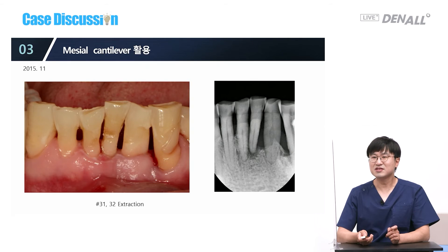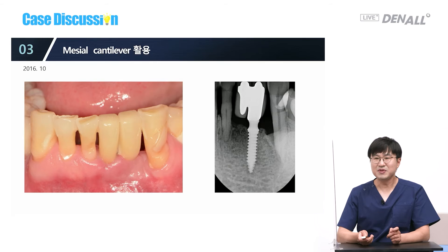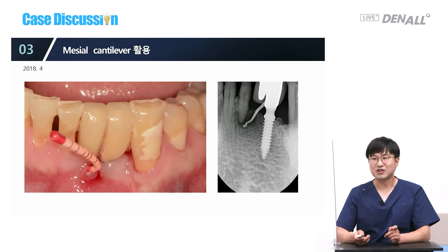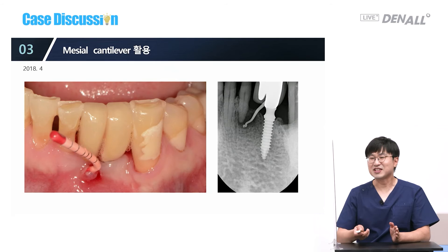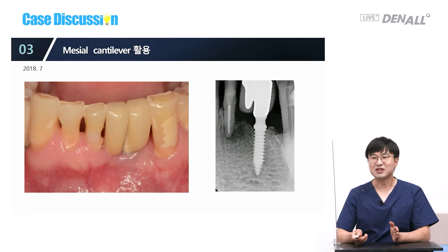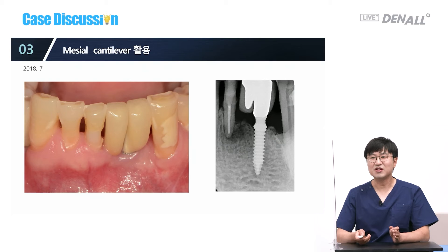I use cantilever only in the lower anterior region. I extracted numbers 31 and 32 and placed one fixture, trying to keep distance from a not-very-good adjacent tooth. As expected, that tooth broke down. Social distancing is very important — and so is the distance between the natural tooth and implant. I chose the cantilever. The implant was not affected by the bad tooth, which got better after endodontic treatment.